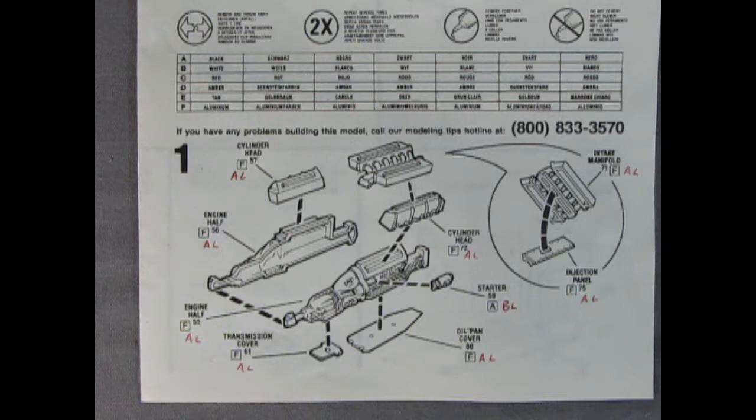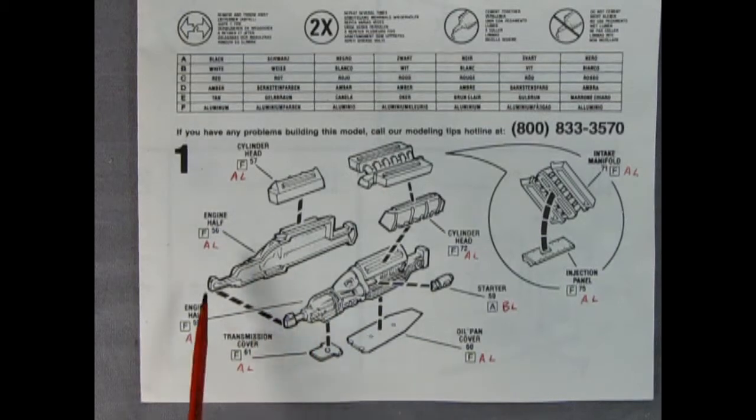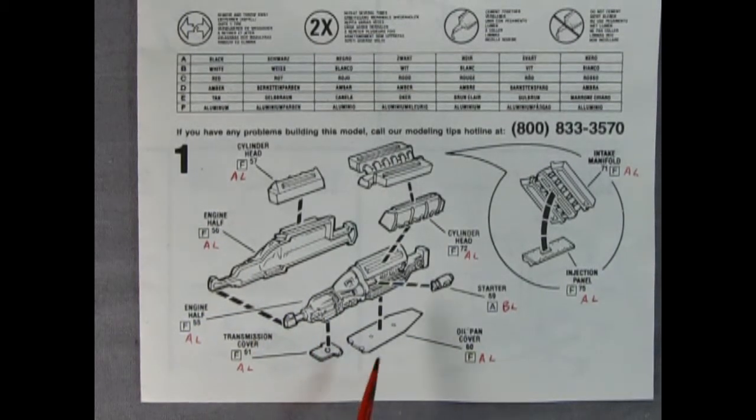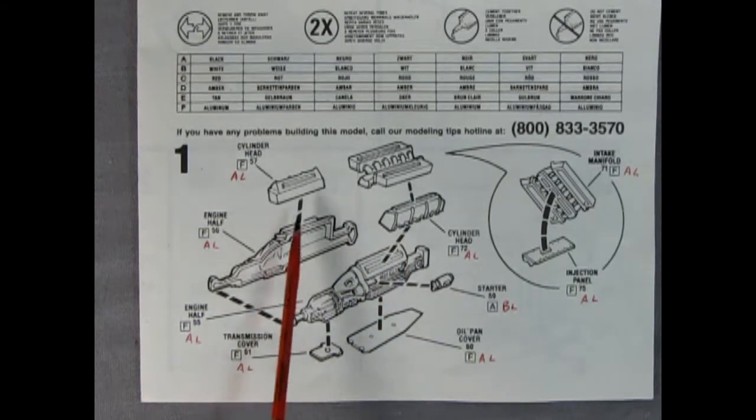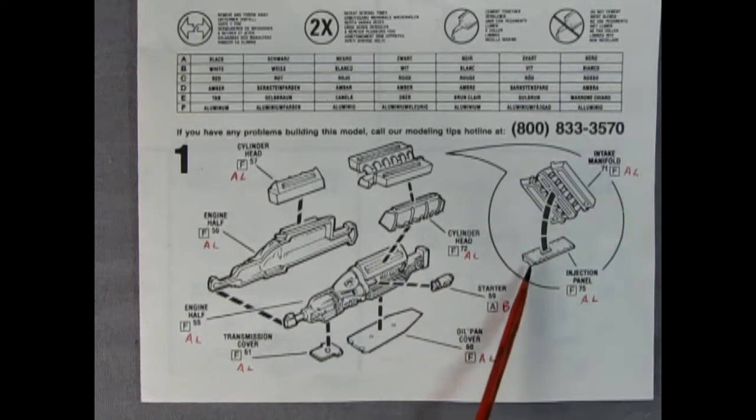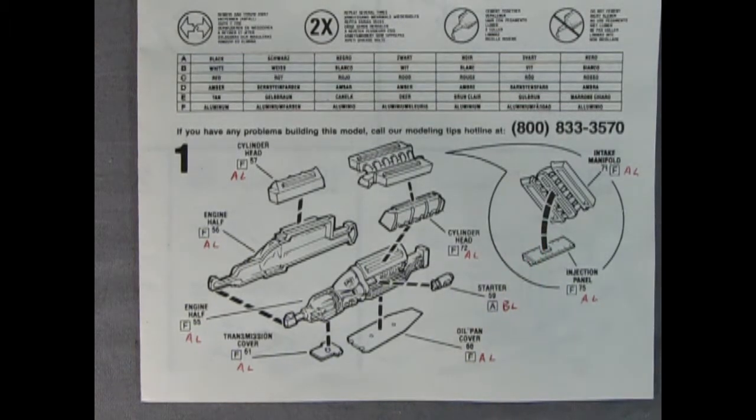Now here we have panel 1 with that amazing Lamborghini V12 motor in there and you've got a right and left hand side that includes the transmission, there's a transmission cover, an oil pan cover, the starter motor, and our cylinder heads and then the intake which is also in two pieces here with the injection panel on the bottom and the intake manifold on the top.